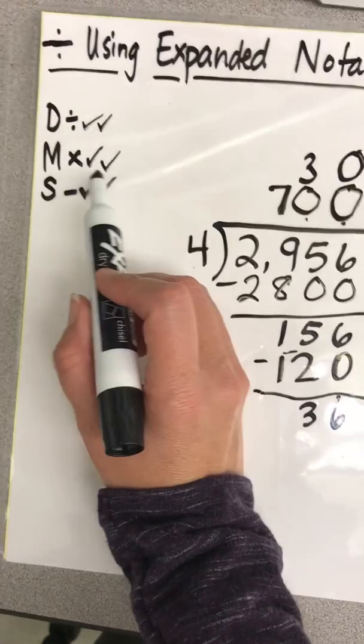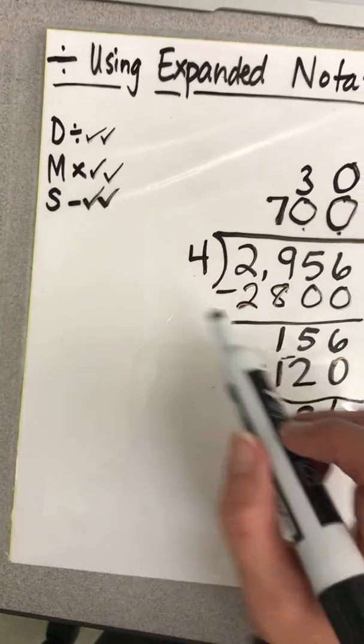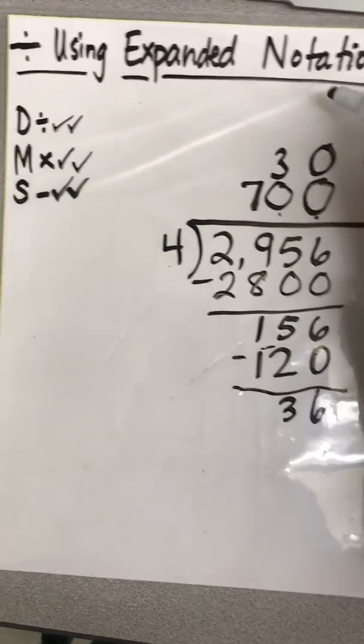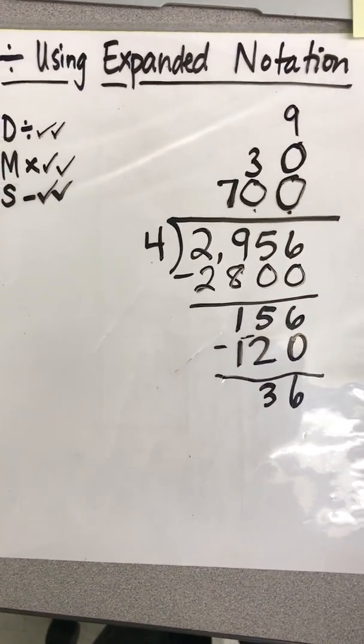And ask how many fours now can fit into 36. And we can just think of it as 36 because it's the ones place. And that would be nine. So I'm just going to go ahead and check off my divide.